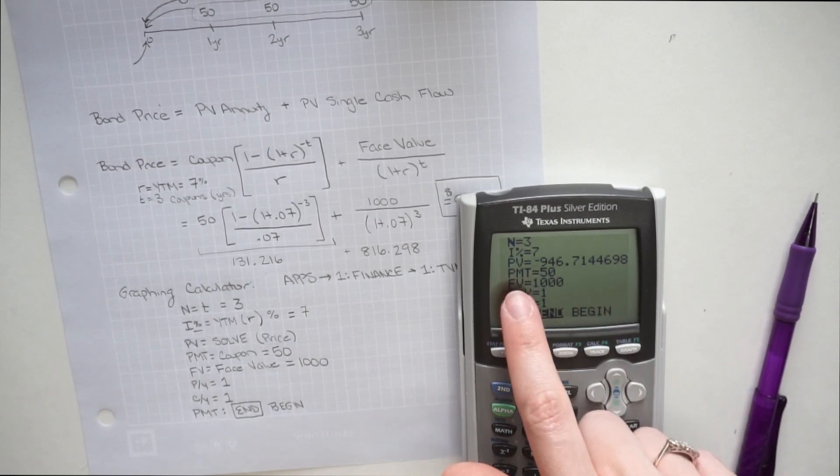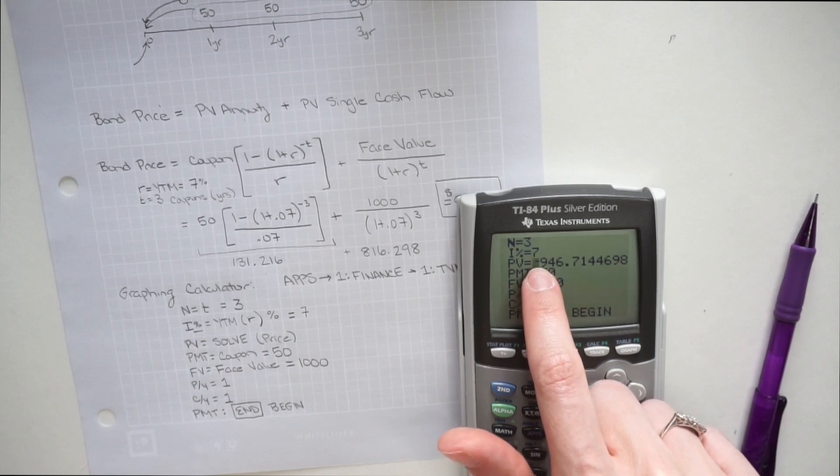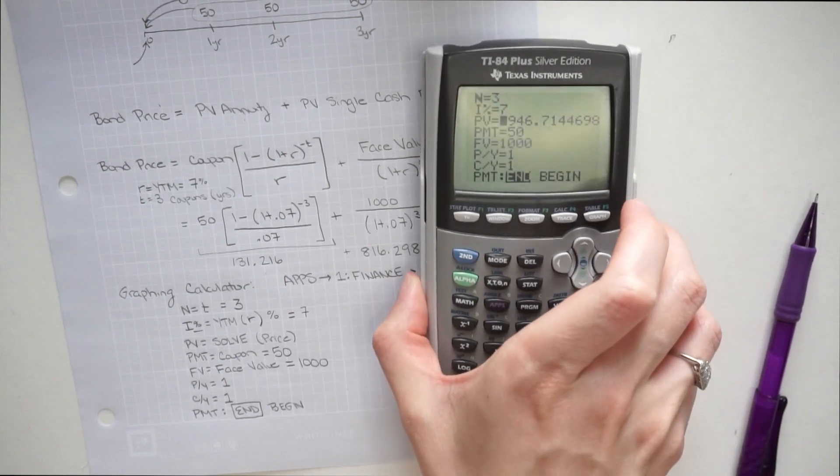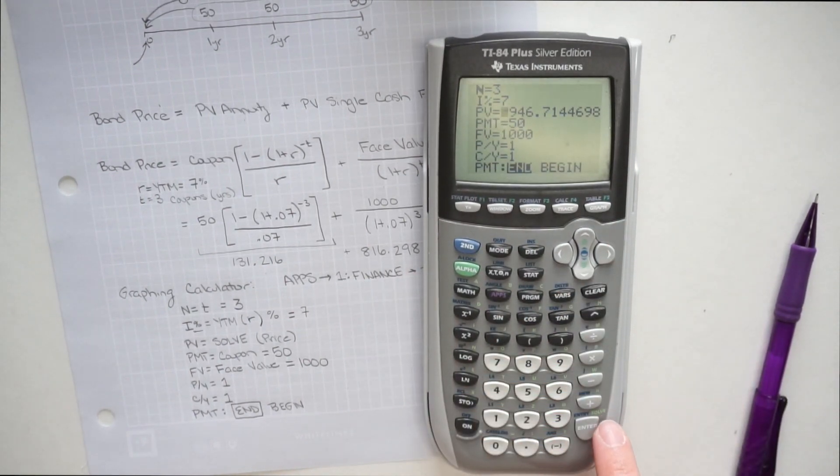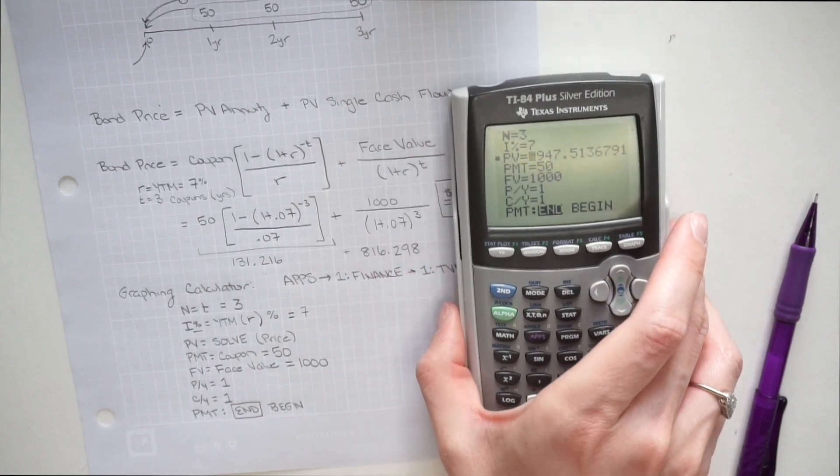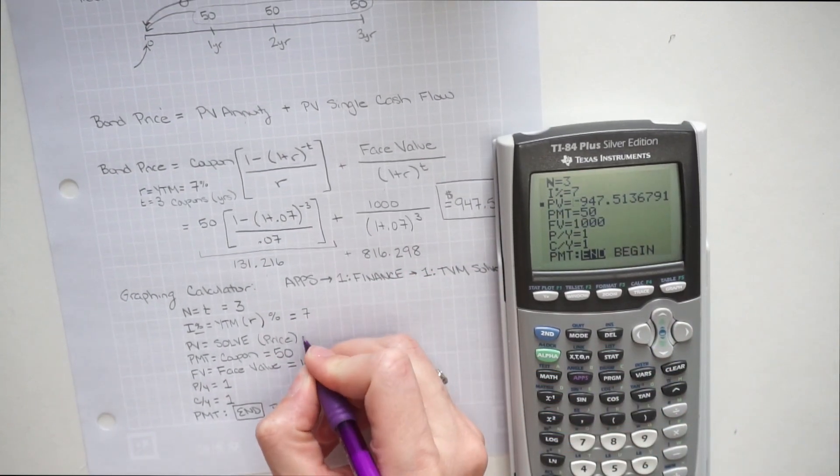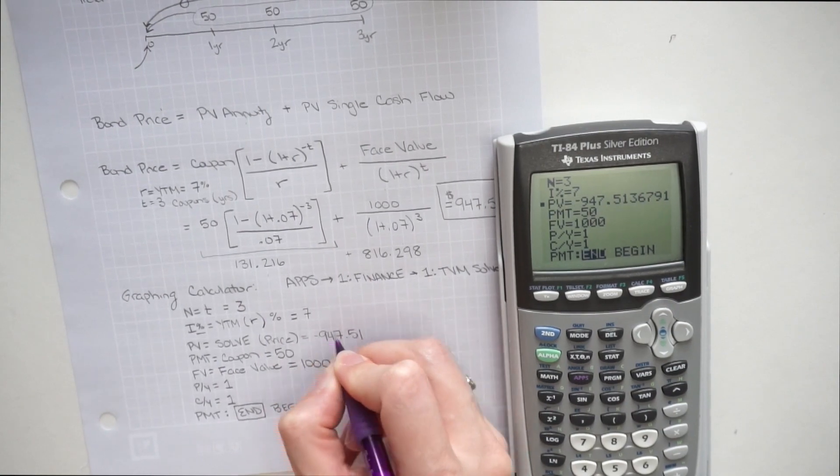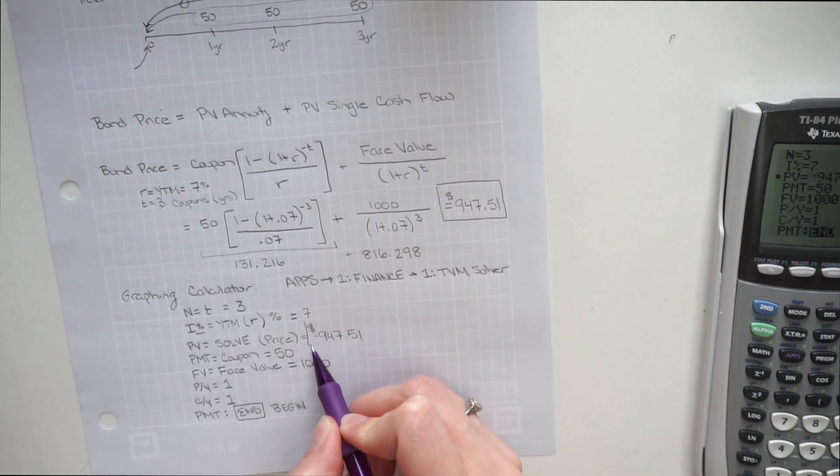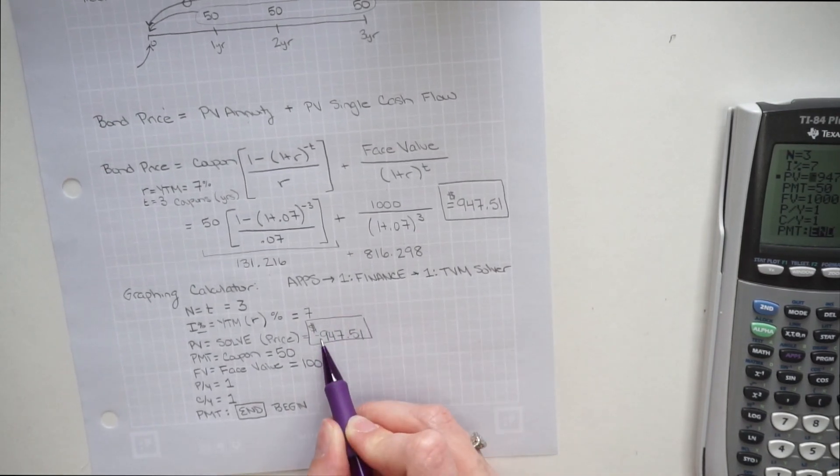Once it's hovering there, what I want to click on is the solve button, which is right above the enter. So right above your enter, it should be green solve. And the way you get it to solve is you're going to press the green alpha button, then enter. And now we have an answer appearing. So that answer says it's negative 947 and 51 cents. So that is the exact same answer we got up above, just now it's appearing as a negative number.